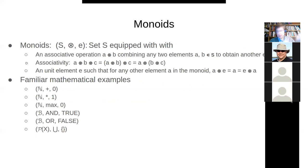At a deeper level, wiring diagrams are morphisms in categories — specifically in what are known as hypergraph categories. As morphisms, they compose, and they also play a key role in operads, where they compose by nesting. You can substitute one wiring diagram into another to get a resulting wiring diagram, which is like composing one morphism with another, and this nesting obeys nice rules.